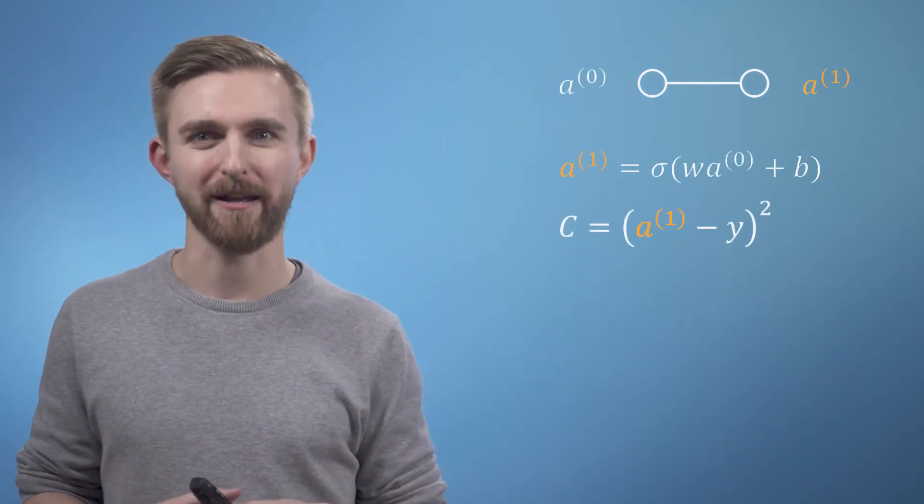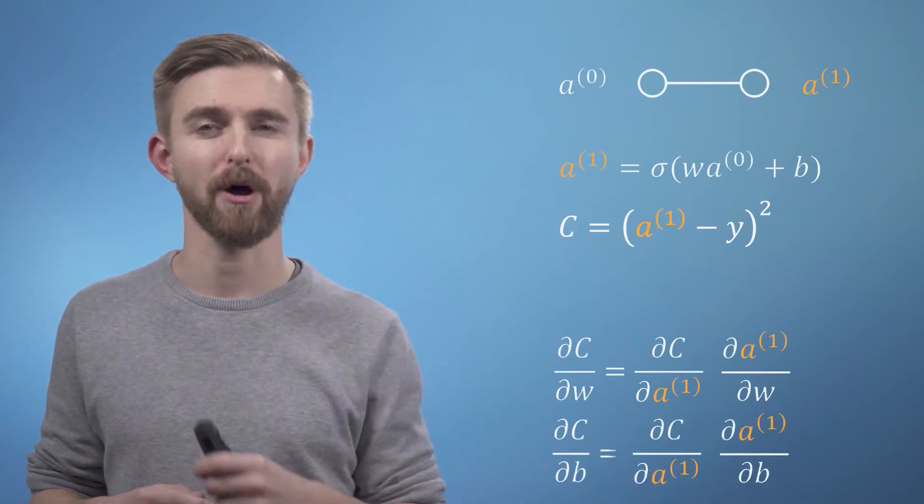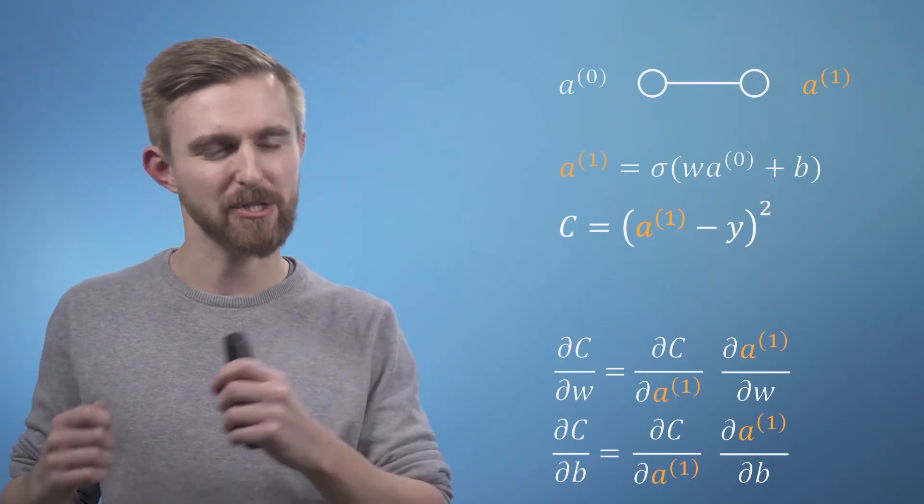So now that we know what we're after we just need to look again at our simple two node network and at this point we could immediately write down a chain rule expression for the partial derivative of the cost with respect to either our weight or our bias. And I've highlighted the a1 term which links these two derivatives.